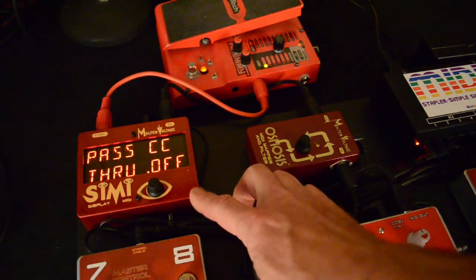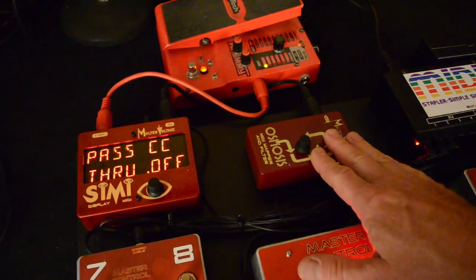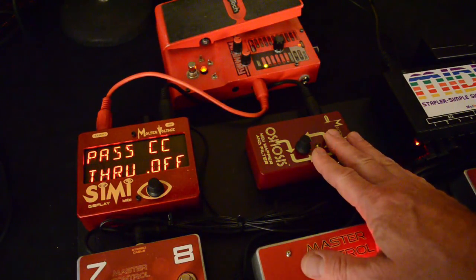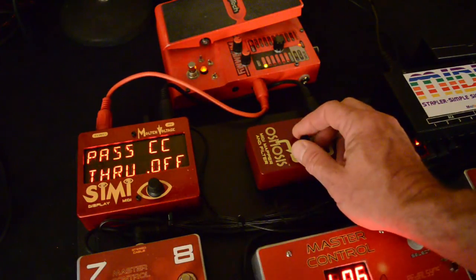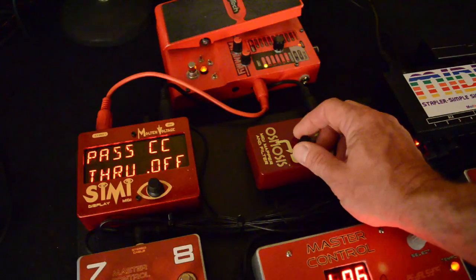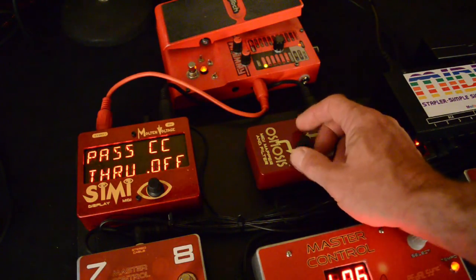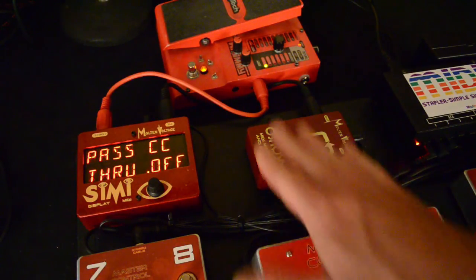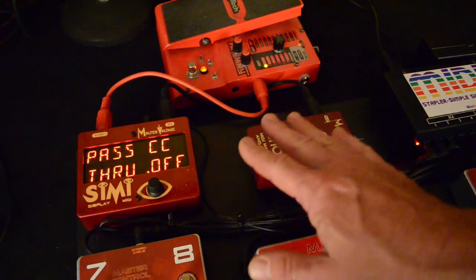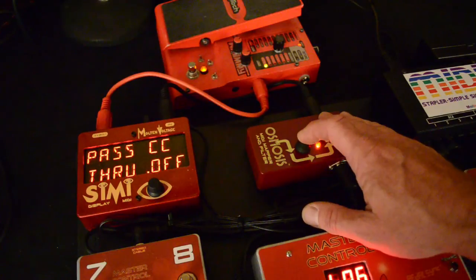Pass CC's Through Off. That means Osmosis can block incoming control changes. Because it sends out its own control changes, the default is to have that Off, but if you want to have that On, you can too. And the other thing is the Pass CC Through, it can be Off, but the Expression controller will still get passed through if it's going to be remapped. So you can leave that one off, probably.